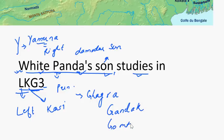How easy was that! The simple sentence is 'White Panda's Son Studies in LKG3.' Just remember that LKG3 — 3 is the section name, LKG is the class — and picture a white panda whose son studies in LKG3.